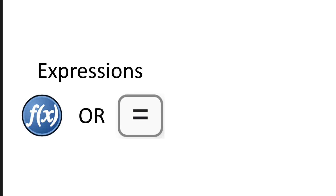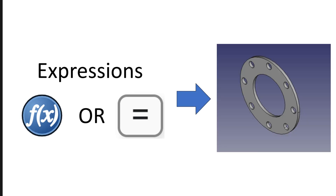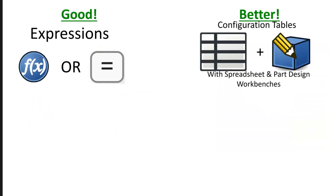I made a video showing how to use expressions to link dimensions to each other to enhance features like scaling and automatic updating. The example I used was a standard class 150 flange. I thought that was pretty good, but then someone in the comments section said, 'You're doing this the hard way. You should use a configuration table.' So I did the same example but with a configuration table, and that was indeed better.